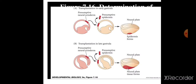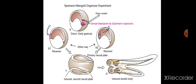The dorsal lip of blastopore region gives rise to the neural plate. When transplanted tissue from late gastrula was grafted, it induced the formation of a neural plate alongside the original, resulting in two newts with complete structures. Both the transplanted graft and the host tissue participated: the graft invaginated inside the host embryo and developed into a secondary embryo with a complete system of organs including notochord, nerve cord, somites, kidney tubules, eyes, and ears. This resulted in an embryo with a double body.